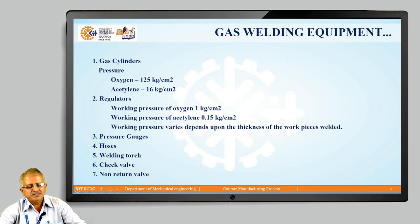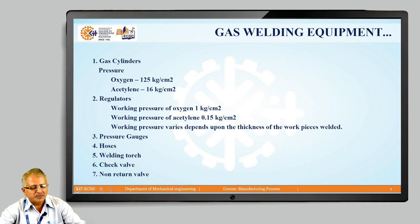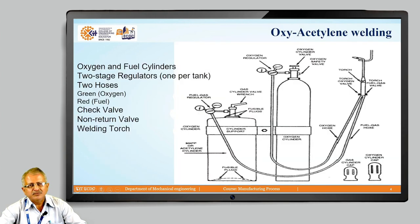The working pressure of oxygen is 1 kg per square centimeter and the working pressure of acetylene is 0.15 kg per square centimeter. This working pressure varies depending on the thickness of the workpiece to be welded. The hose supplies gas to the welding torch, and a non-return valve controls the flow of oxygen and fuel gas in one direction only.